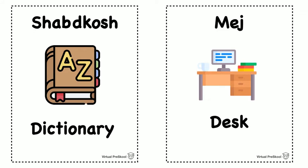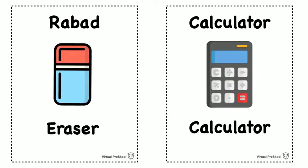Shabdkosh is dictionary. Let's try that one again because it's kind of a mouthful. Shabdkosh. Shabdkosh. It's dictionary. Mejj is a desk. Mejj. Desk.